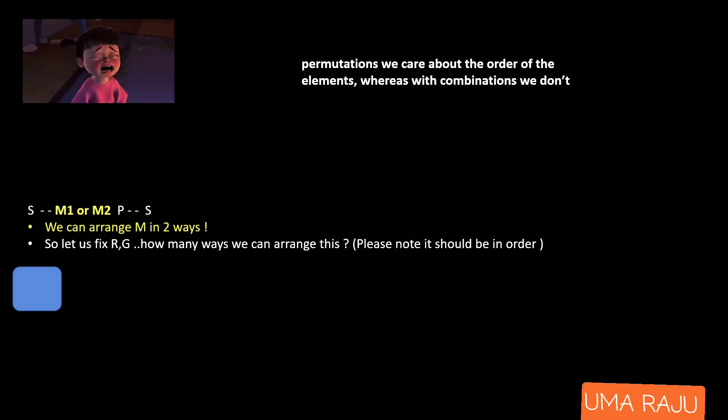Permutation or combination? In permutations we care about the order of elements, and here order is very important. For example, if you arrange the letters A, B, C with no rules at all, you get: ABC, ACB, BAC, BCA, CAB, CBA — three letters can be arranged in 3 factorial ways. Now coming back to our problem.